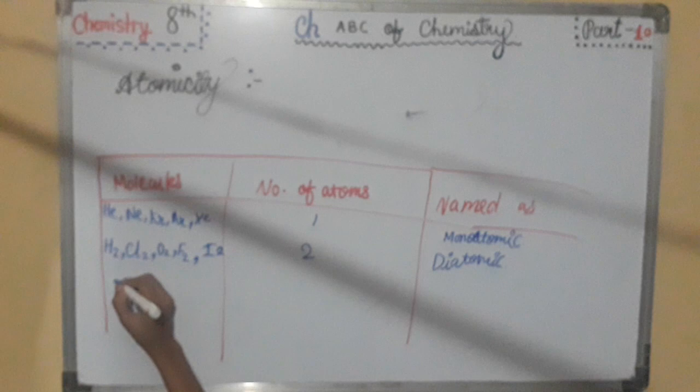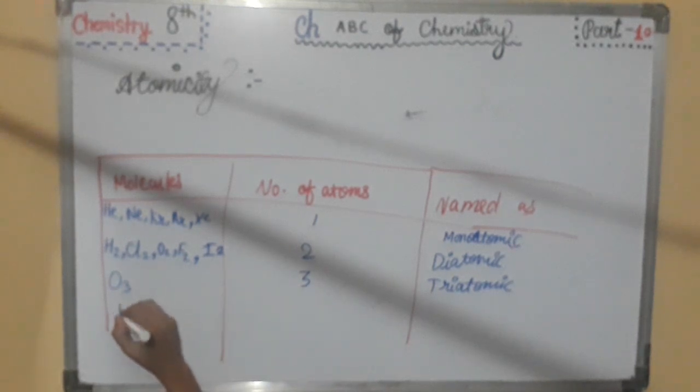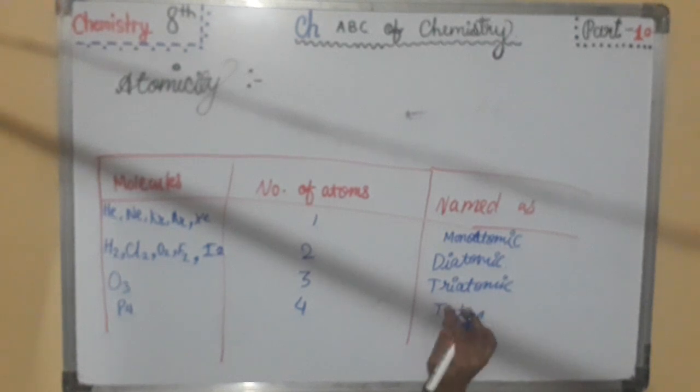Here is O3 means ozone. Number of atoms 3 named as triatomic. Fourth is P4. Number of atoms 4 named as tetraatomic.